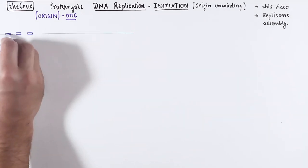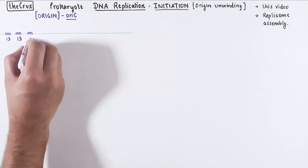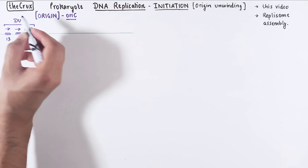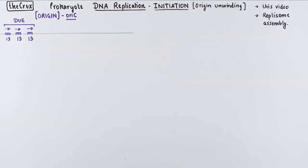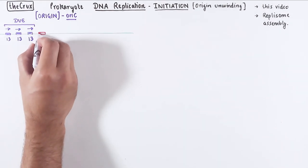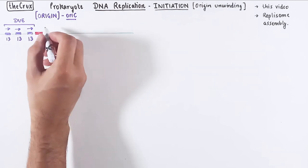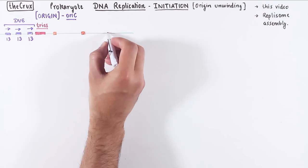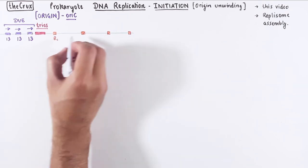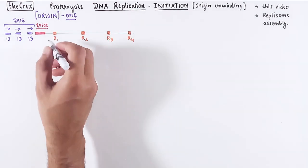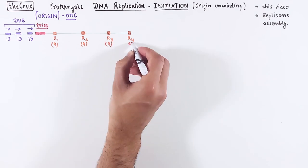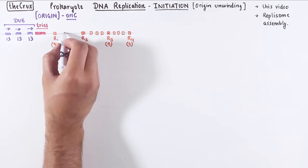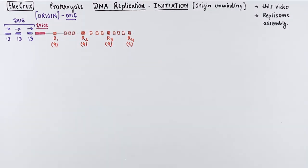A quick recap of the origin is that it contains these three directional repeats that are 13 nucleotides in length which form the DUE region, also known as DNA unwinding element. In the proximity of the region is a segment called DNA trios. Following the trios, we have regions called R1, R2, R3, and R4, which are nine nucleotides in length.